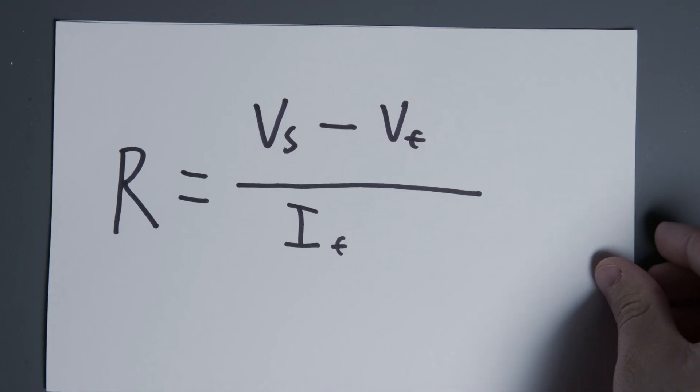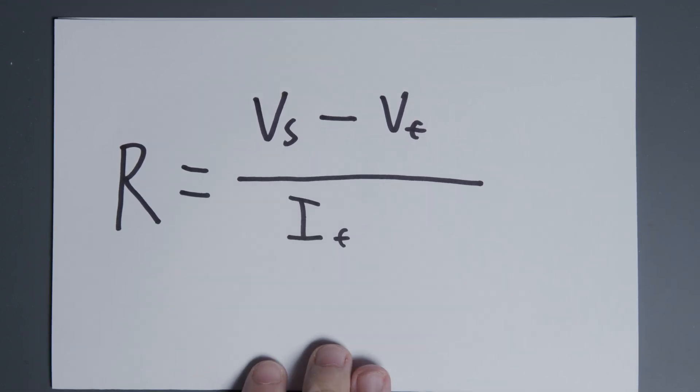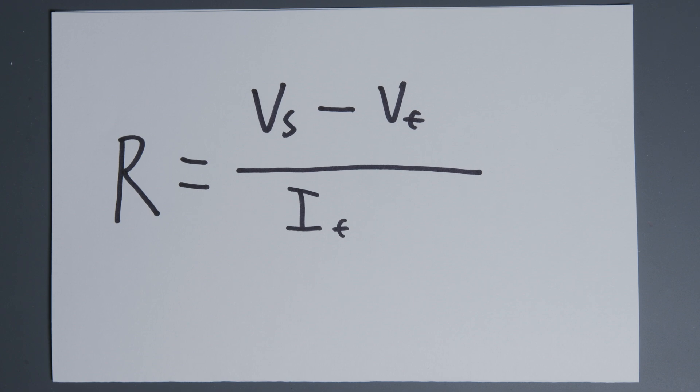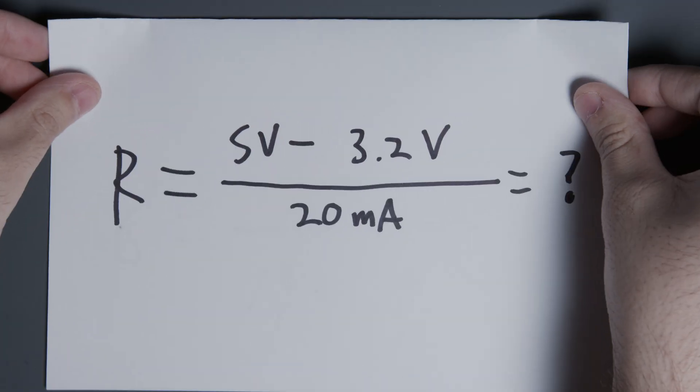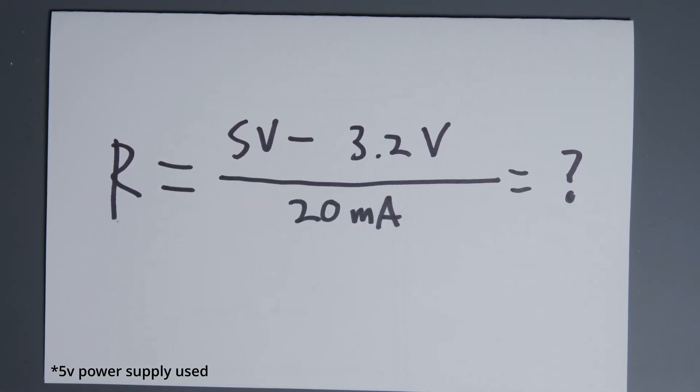We can use this formula to calculate the desired resistance value. Source voltage minus the forward voltage of the LED divided by the desired LED current. Let's fill in the values we found from the data sheet and plug these into our calculator to define the desired resistance of 90 ohms.